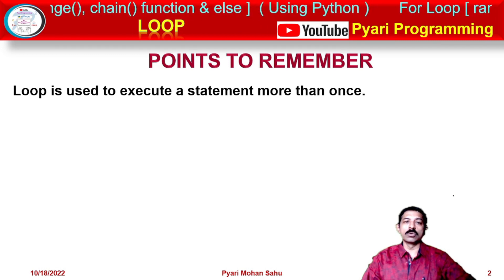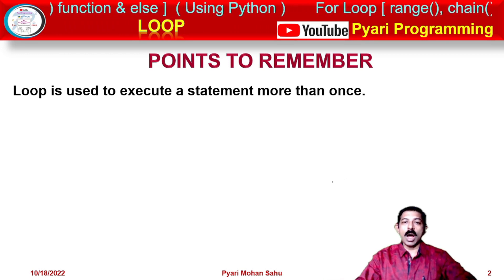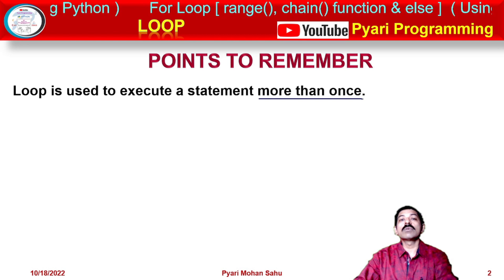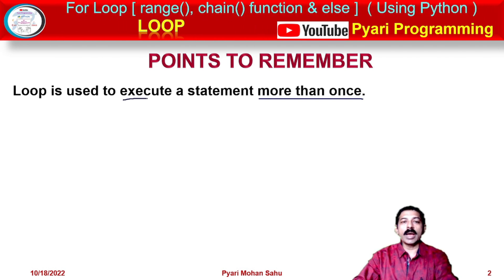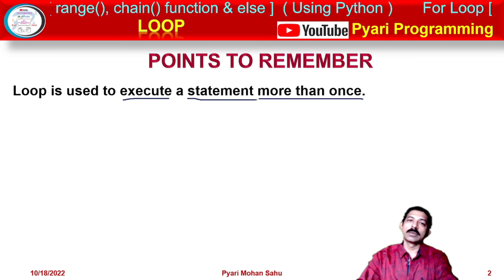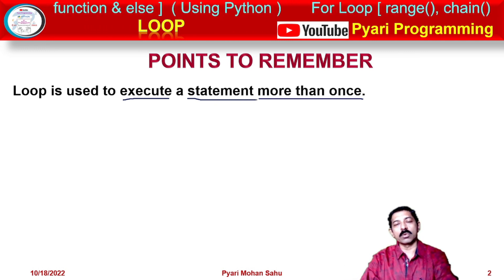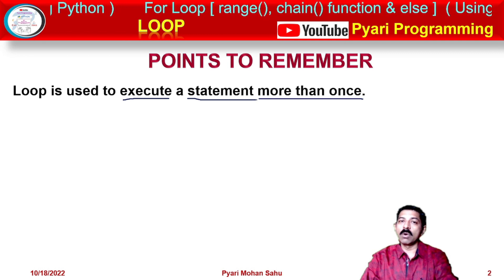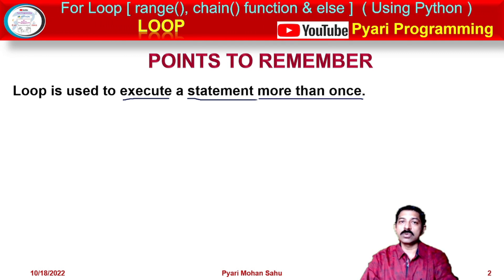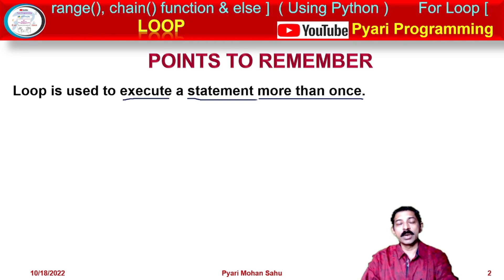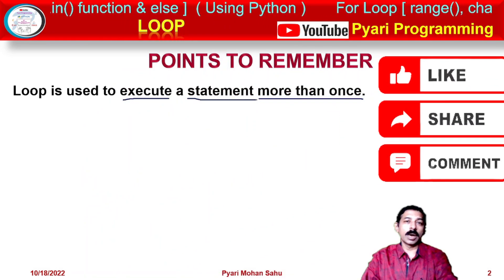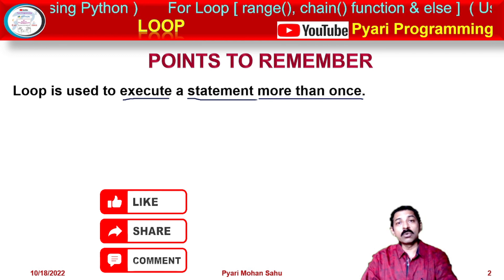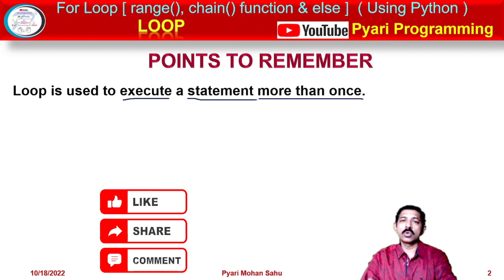A loop is used to execute a statement more than once. Normally a statement executes only one time, but if I want to execute a statement more than once then I will use a for loop. If you want to execute a statement more than once, then we need a loop.